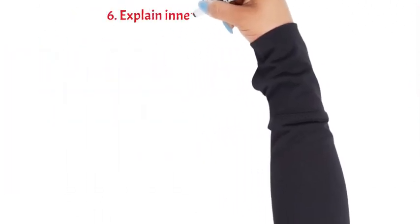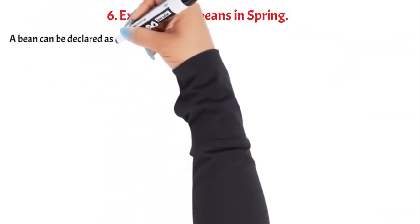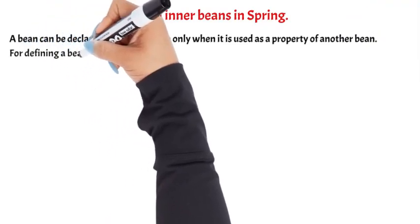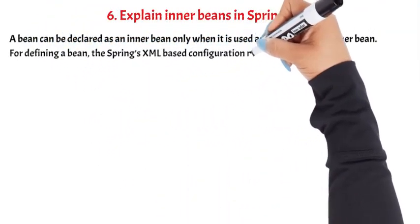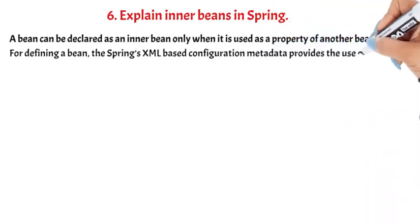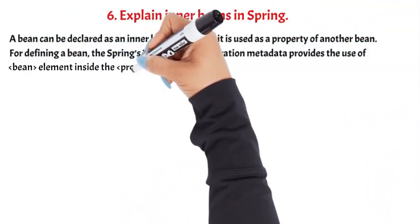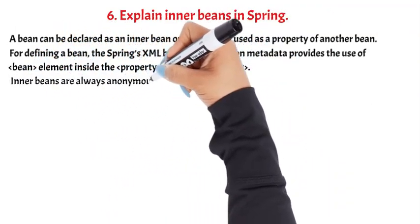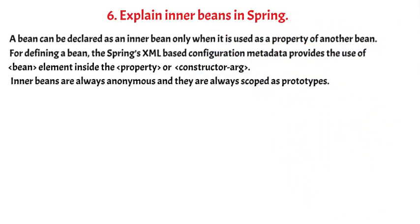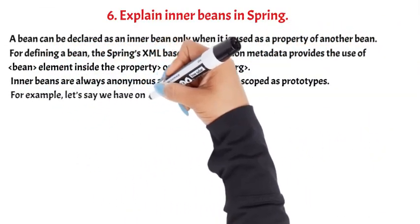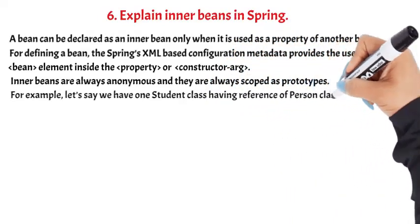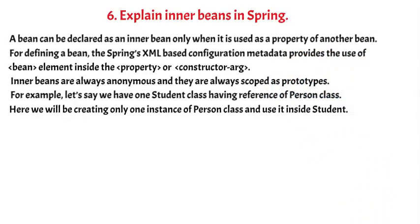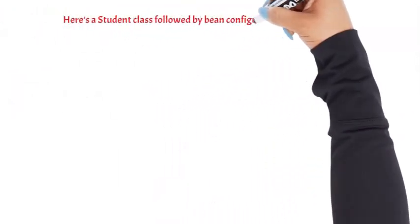Question 6: Explain inner beans in Spring. A bean can be declared as an inner bean only when it is used as a property of another bean. For defining a bean, Spring's XML-based configuration metadata provides the use of the bean element inside the property or constructor-arg element. Inner beans are always anonymous and they are always scoped as prototypes. For example, let's say we have one student class having a reference of a person class. We will be creating only one instance of person class and use it inside student, followed by the bean configuration file.